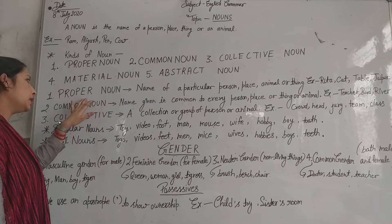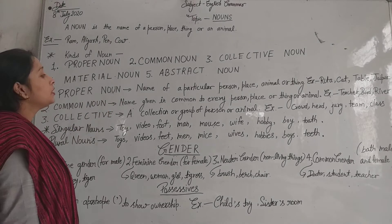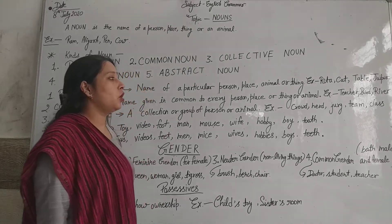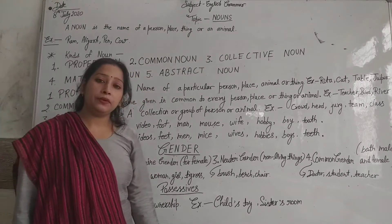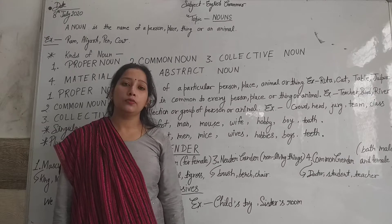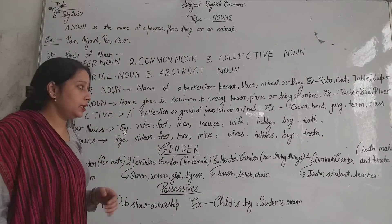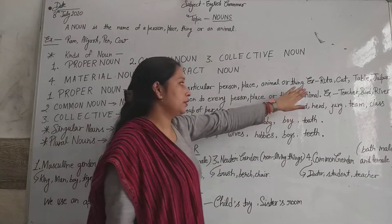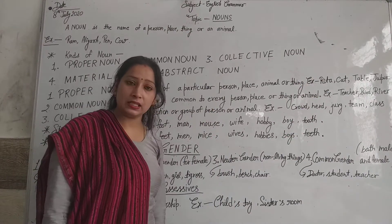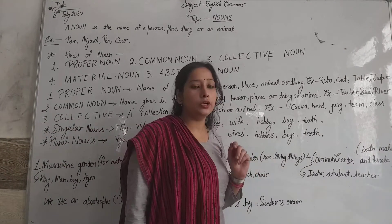What is a proper noun? The proper noun is called Vyakti Vachak Sangya. The name of a particular person, place, animal, or thing is called a proper noun. For example, Rita — that is the name of a particular girl, not all girls are named Rita. Everyone has a different name — they are unique.